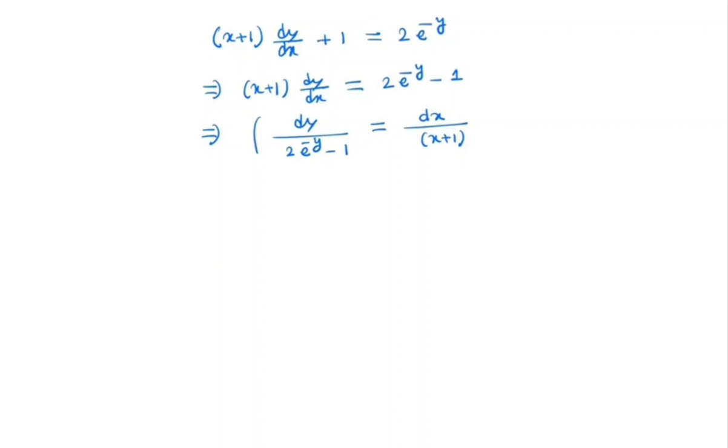Now we integrate both sides. On the left hand side, we have dy/(2e^(-y) - 1). We will multiply by e^y in the numerator and denominator to keep it the same. On the right hand side, it is ln|x+1|.